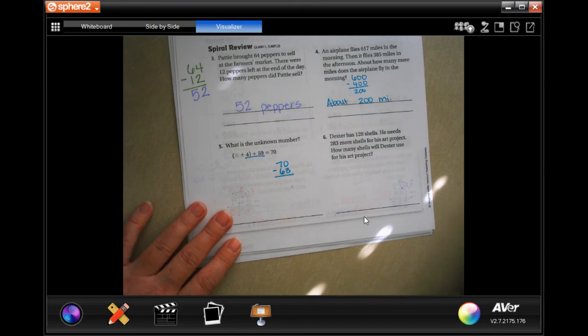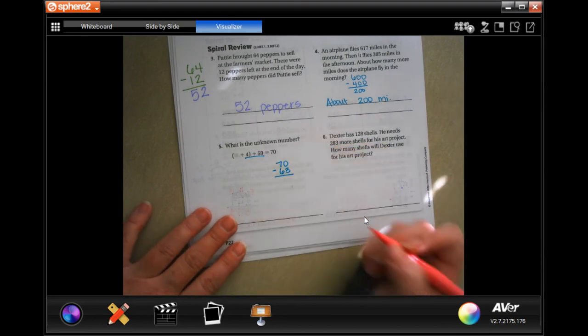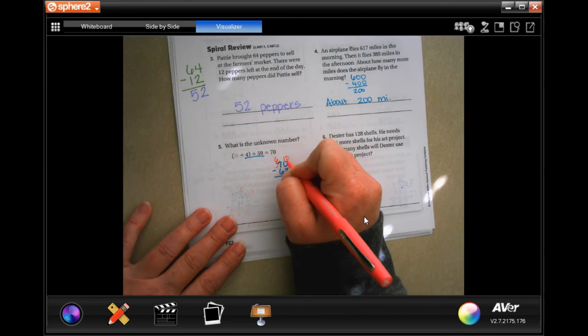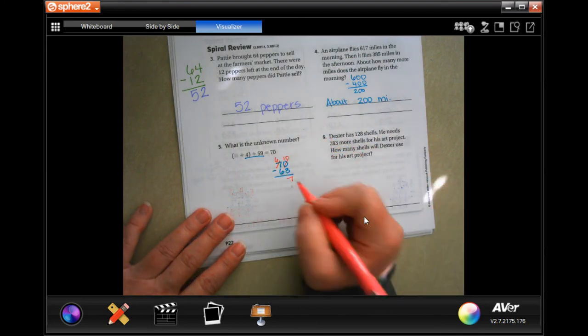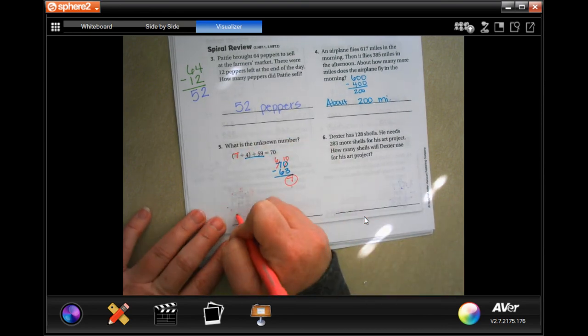So 0 can't take away 3. I'm going to borrow one. That makes that a 10. 10 minus 3 is 7. 6 minus 6 is 0. So, 7 is what goes in there.